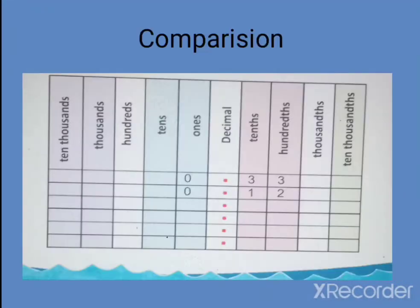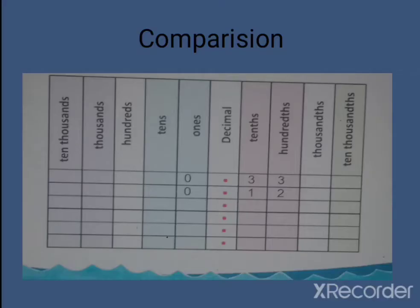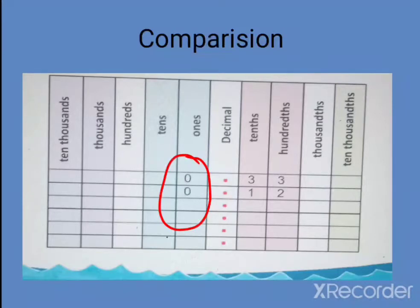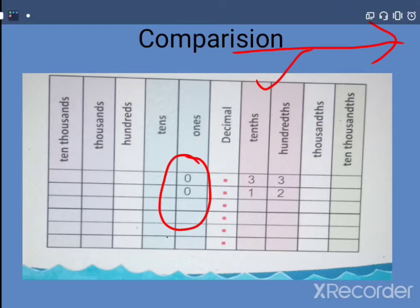Here you have two numbers to compare. One is 0.33 and the other is 0.12. We have to compare them. First, compare the whole number part — 0 and 0 are the same. Now in the decimal part, look at the first place after the decimal. You will go right side — the number that is smaller tells us the comparison.